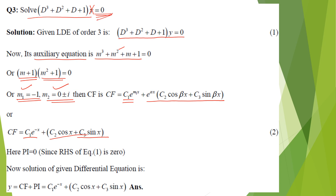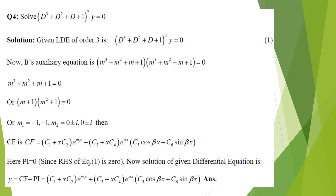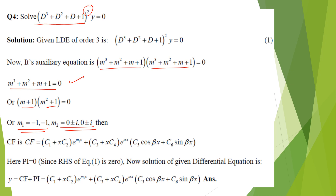In Example 4 we use the same equation as Example 3 but with the whole expression raised to the power 2. Since the two bracketed terms are the same, we solve one equation and get the same roots: −1 and ±i. However, because the power is 2, each root is repeated twice. So the real root −1 is repeated twice, and the complex roots ±i are also repeated twice.